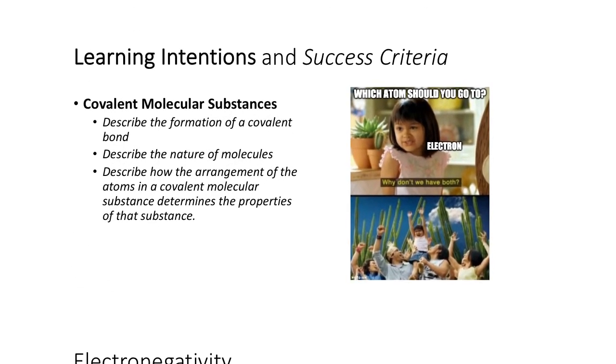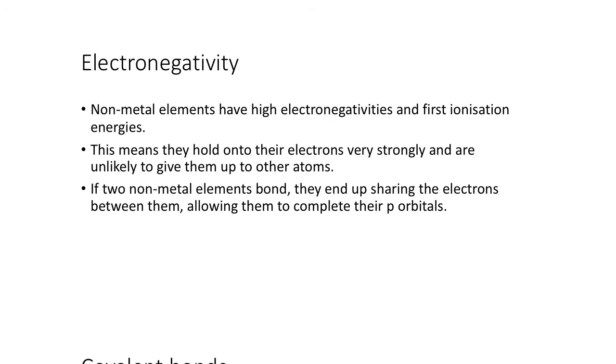We're going to be learning about the properties and how those of the atomic structure of covalent molecular substances determine their properties. First of all, we always have to start off with electronegativity and understanding that we're dealing with non-metal elements here. You should remember that metals or metallic bonding is only dealing with metals. Ionic bonding is metal and non-metal, and then covalent molecular bonding is effectively just non-metals and how they bond to each other.